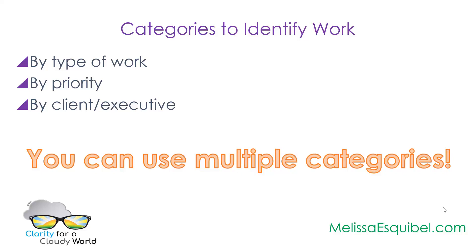You can also do it by client or by executive. If you support multiple executives, when you're sitting in your one-on-one, you can quickly go to everything you're working on for them and have that discussion. If you're in a client-facing position supporting sales, nothing is more encouraging to a client than having all the current information in front of you. You don't have to pick just one strategy — you can assign multiple categories. For example, 'Prepare a Contract' can also be 'By Close of Business.'